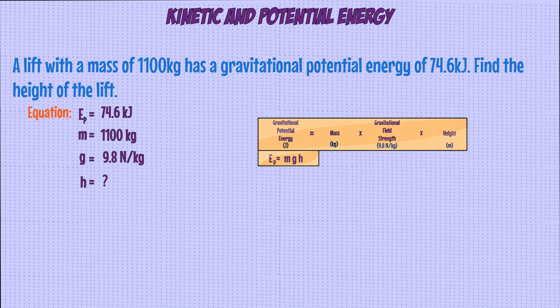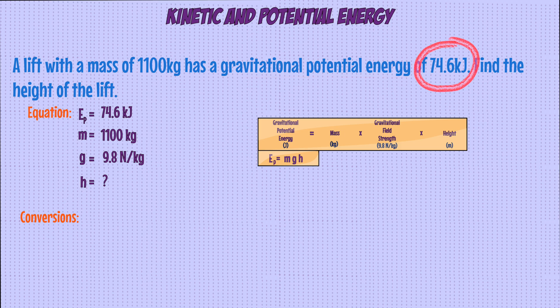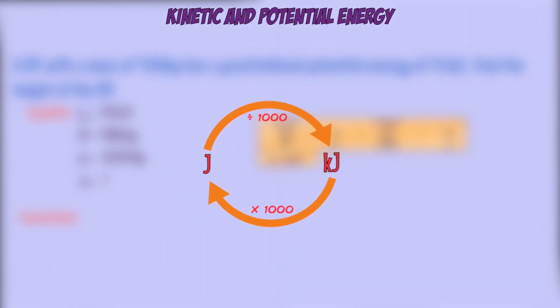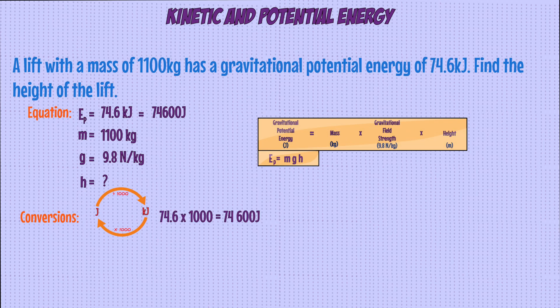The next step is to look for any conversions. Mass and gravitational field strength are both in the correct unit, but gravitational potential energy is given in kilojoules, and in the equation it needs to be in joules. So we need to convert from kilojoules to joules — to do that, you just multiply the 74.6 by 1,000, which gives you 74,600 joules.